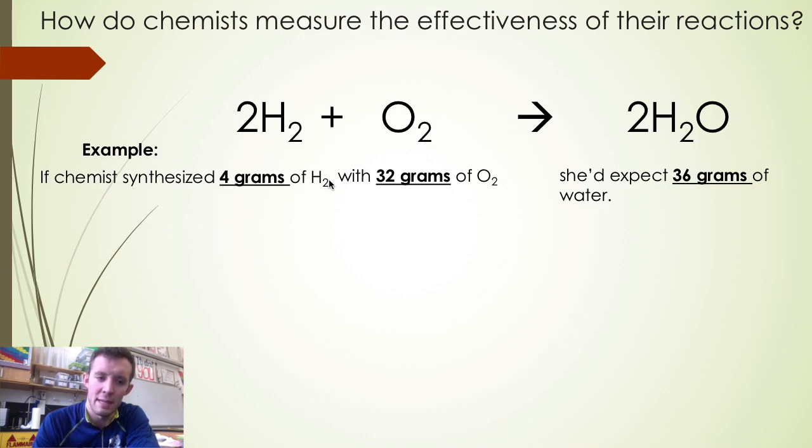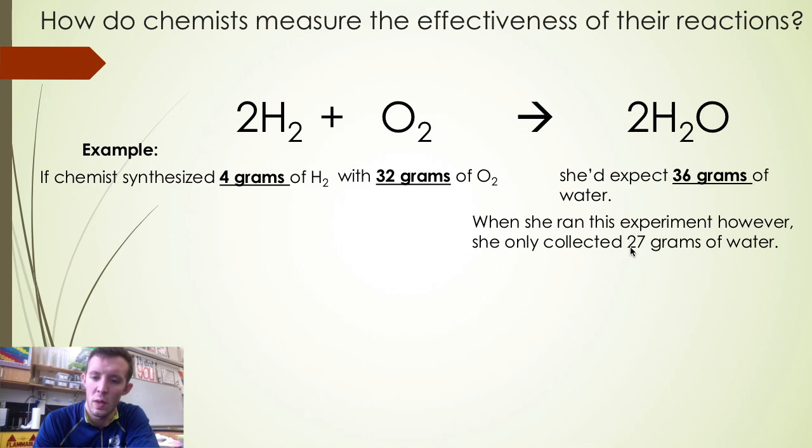However, in our example, when the chemist ran this reaction, she only produced 27 grams of water. And so doing the math on that, she produced 27 grams of water out of a possible 36 grams. Her reaction yielded 75% of the product that she thought it would.